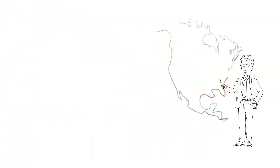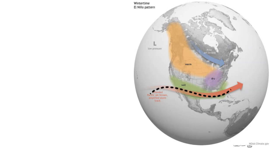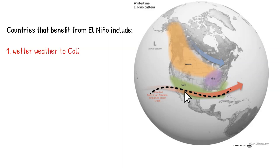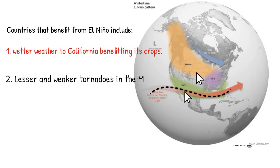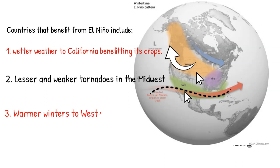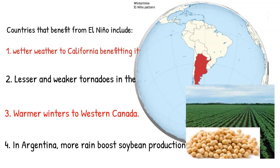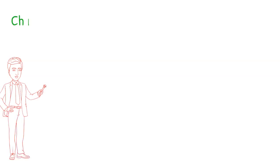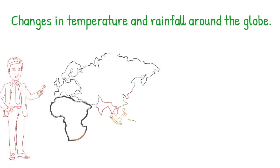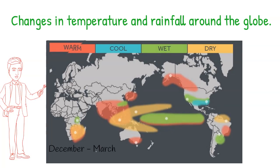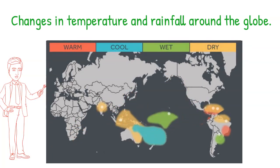However, other countries benefit from El Niño. For instance, in the United States, El Niño brings wetter weather to Southern California, helping crop growth, and causes lesser and weaker tornadoes in the Midwest, as well as warmer winters in Western Canada. In Argentina, more rain boosts soybean production used for export. El Niño changes large-scale wind patterns that result in changes in temperature and rainfall around the globe.